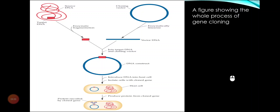The cells carry the construct and are identified. The cells that take up the construct are identified and grown. If required, the cloned cells can be induced to express the target gene in the host cell, and the protein from the target DNA can then be harvested or collected.